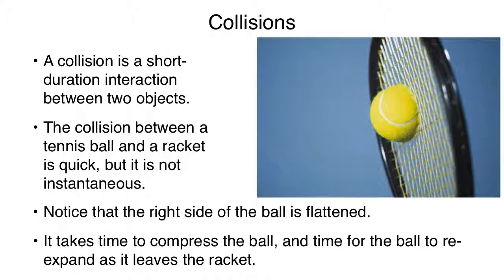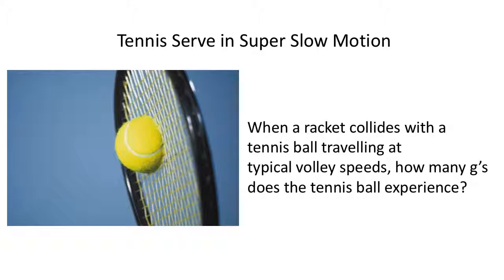If this ball flies in from the left heading towards the racket and then it interacts, which way is it going to bounce back? Back to the left. This is what we're going to see — it's related to momentum. When I have a strong force pushing this object away, it's going to change its velocity into the other direction. The question we'll ask at the very end is: when a racket collides with a tennis ball traveling at a typical volley speed, how many G's does this tennis ball experience? That's not trivial, so we have to work through it.